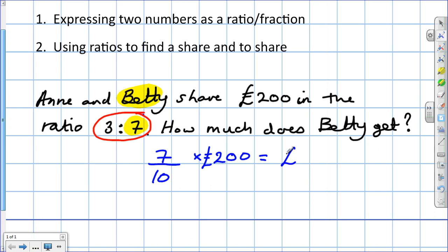What about Ann? There's a number of ways of doing it, but let's keep to the same system. Ann was the first number mentioned. So that's the first part of our fraction. Because we know the total, we have to use the total number of shares. So it'll be 3 tenths times 200. And your calculator will give you 60 pounds.